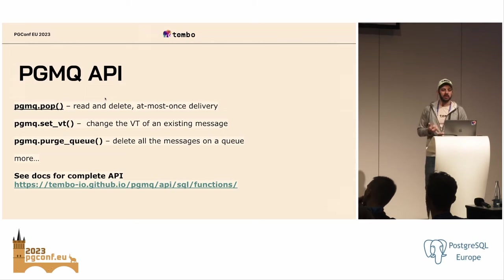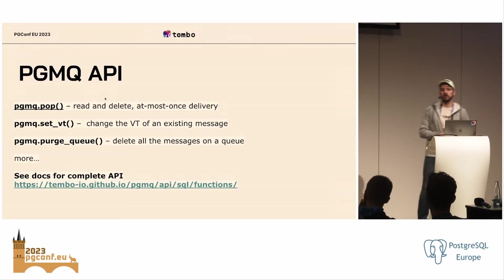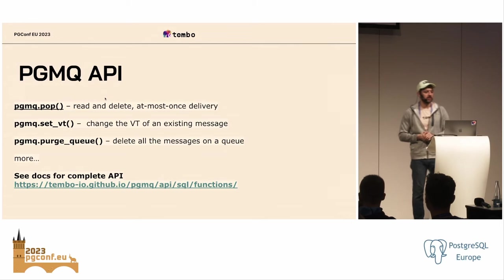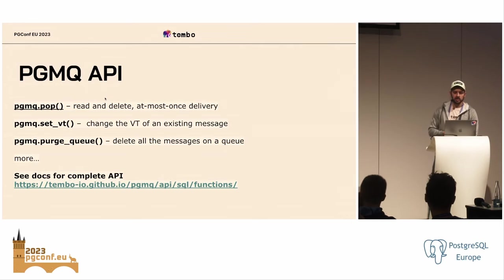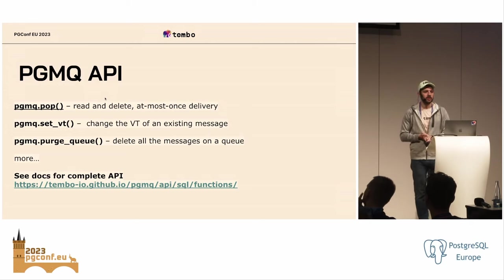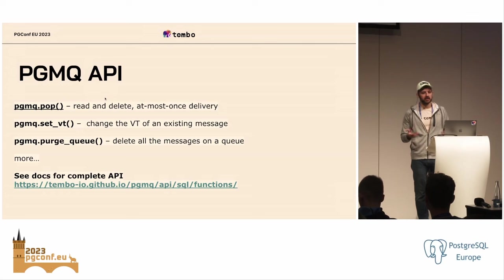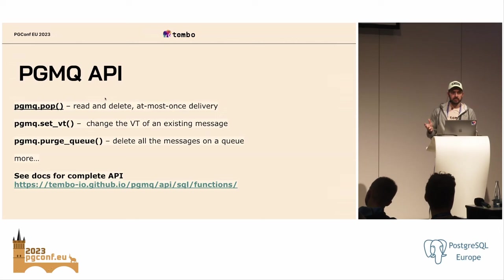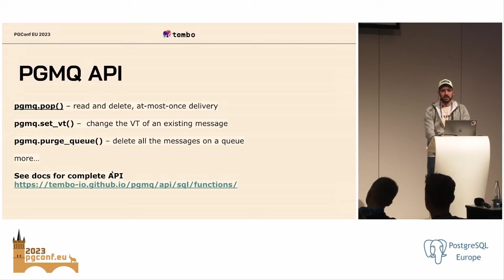There's also pop — it's a little more dangerous because it deletes the message from the queue at the same time that you read it. So if at-most-once is fine for you, pop could be great. You can also set the visibility timeout: if you're processing a message and need more time, you can reset the timeout, or return the message to the queue immediately. You can purge queues — just wipe out a queue pretty easily. And we do have docs if you want to see the complete API.